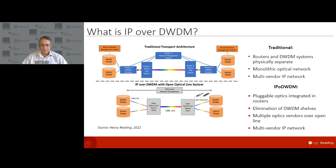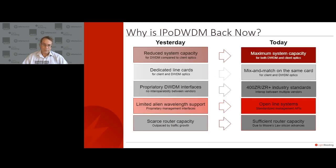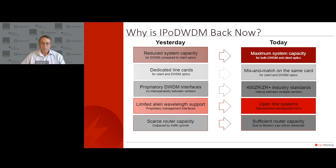Beyond the optics, there are many different components. The main thing is integrating the optics into the router. What you need for interoperability will be an open optical line system where pluggables from different vendors ride over a common line system. So now we're moving to multi-vendor IP and optical layers. It's not a new concept — people in the industry will know we were talking about IP over DWDM back in 2000 and maybe even earlier.